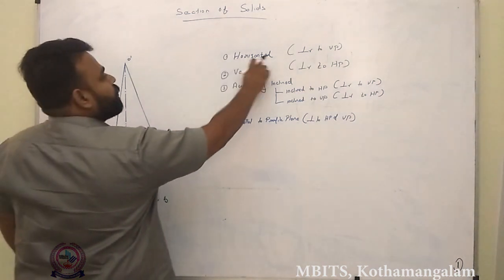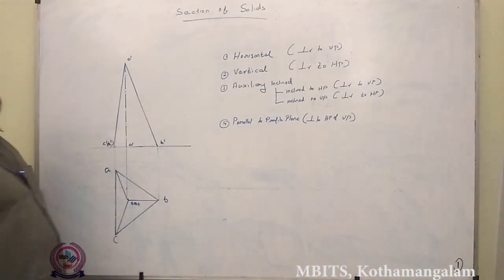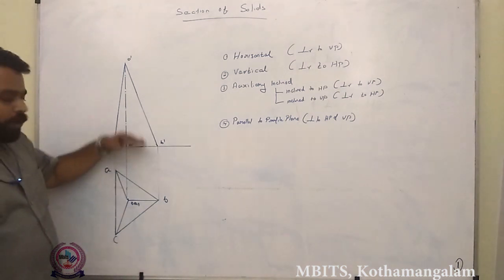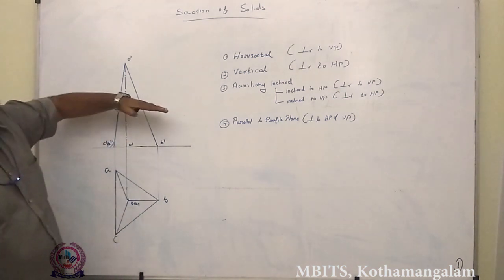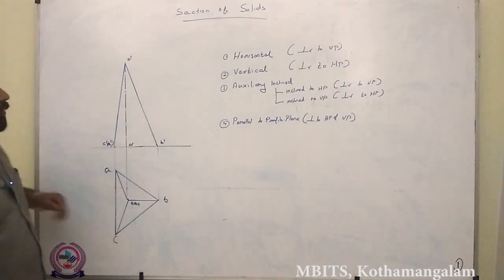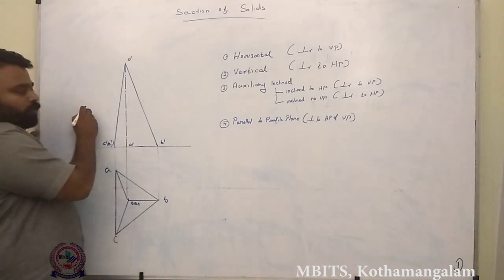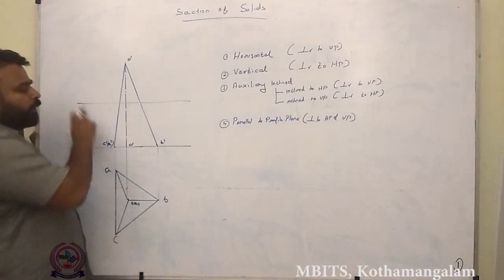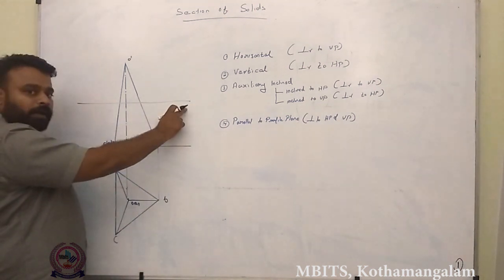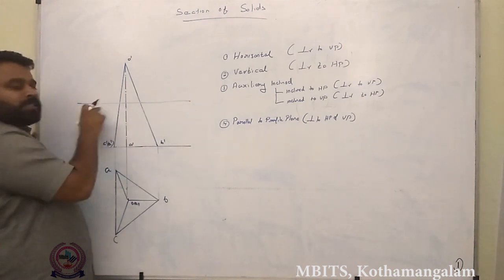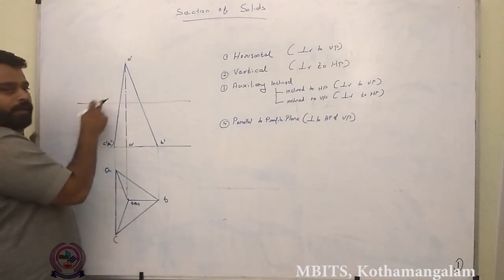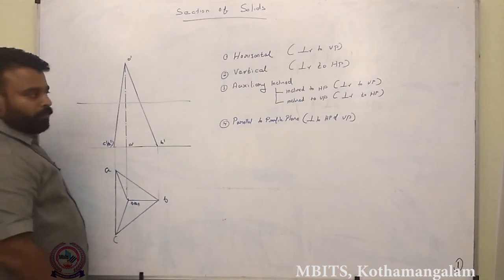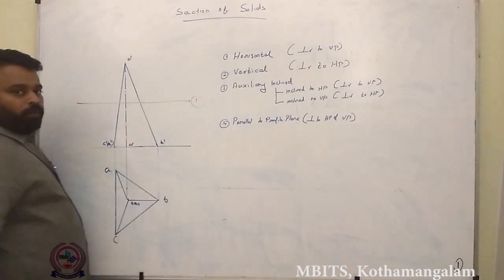Consider the first condition: a horizontal section plane means a section plane that is parallel to HP and perpendicular to VP. Since it is parallel to HP, that section plane can be drawn in front view. We are using this section plane to cut the solid and then we remove either the top portion or the bottom portion depending upon the requirement.